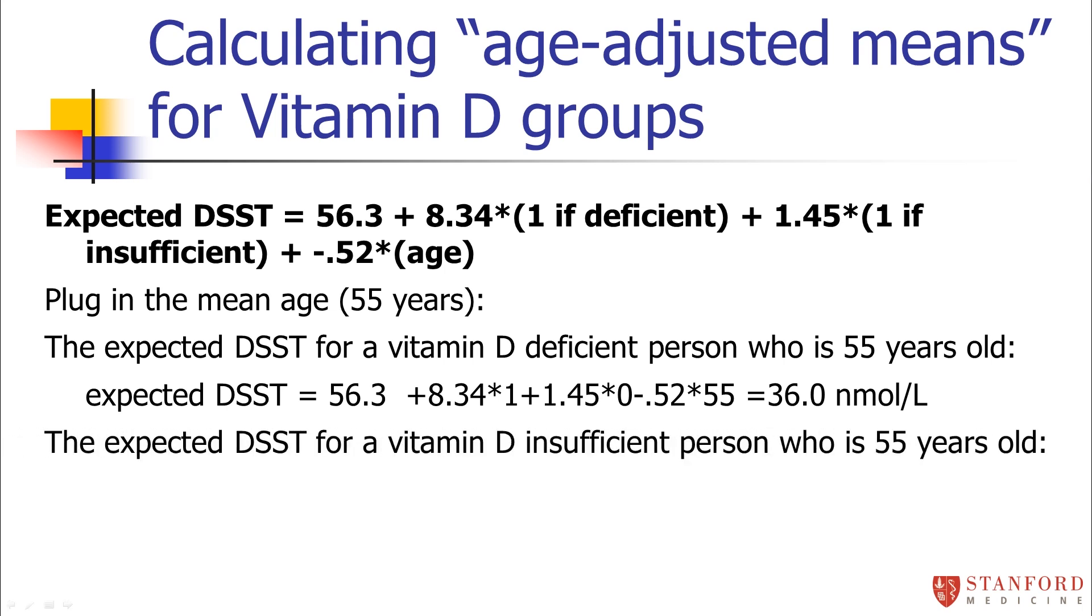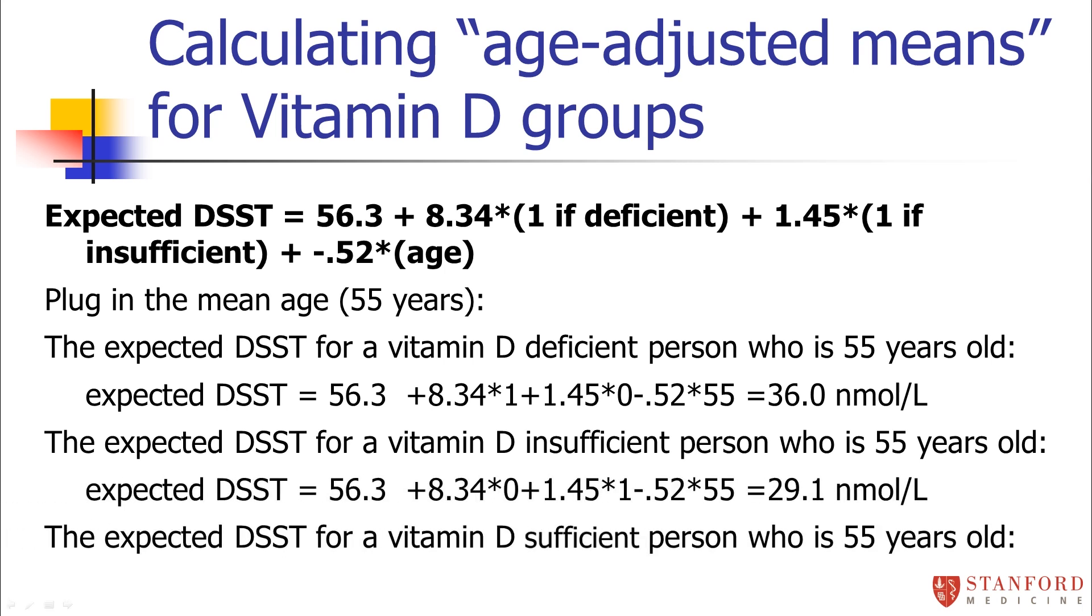Somebody who is insufficient, who's 55 years old, based on this model, is predicted to have a DSST score of 29.1. And for the normal group, a 55 year old is actually predicted to be lower and have a DSST score of 27.7. Again, probably a quirk of my made up data.